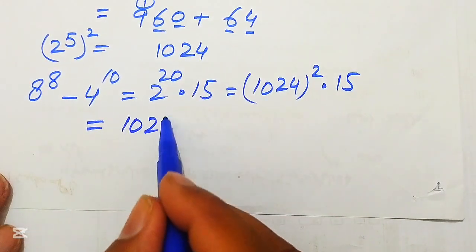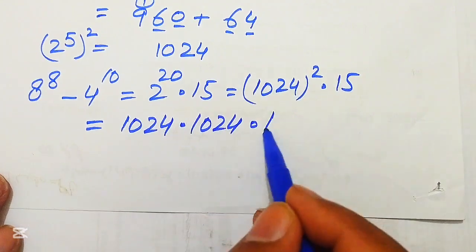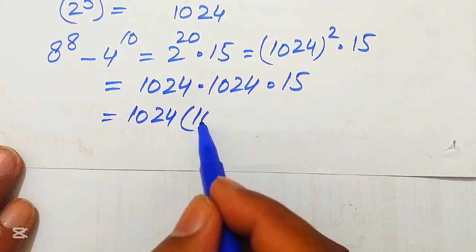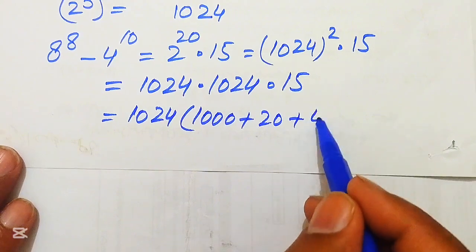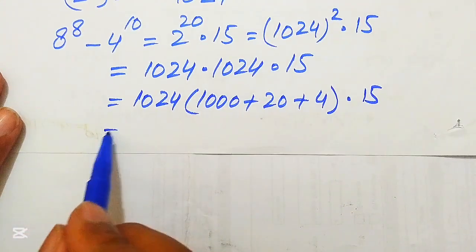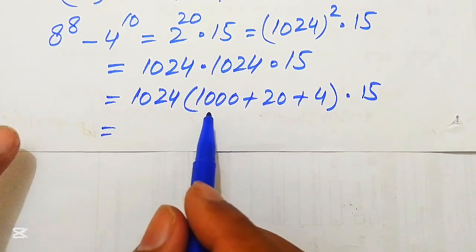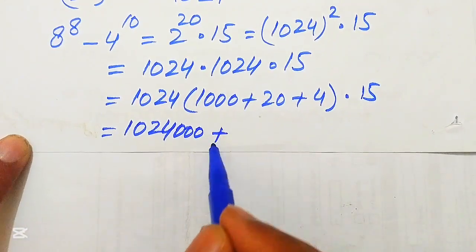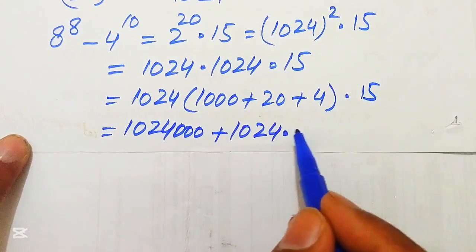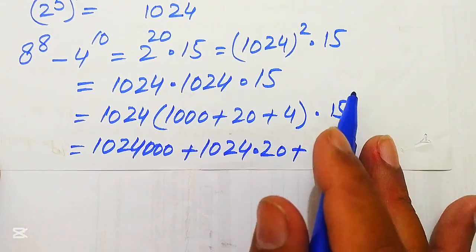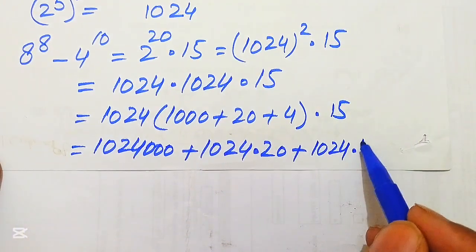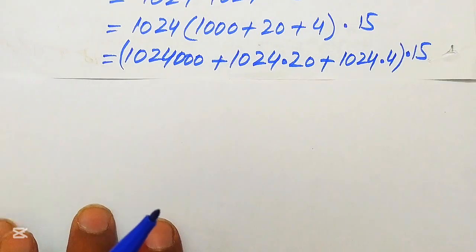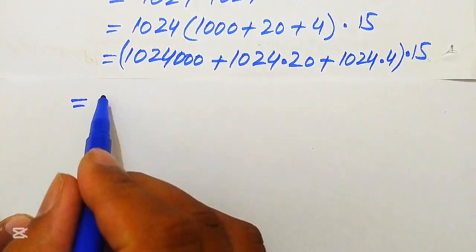We write 1024 squared as 1024 multiplied by 1024, and then multiply by 15. We break one 1024 as 1000 plus 20 plus 4, so we have 1024 × 1000, plus 1024 × 20, plus 1024 × 4, all multiplied by 15.